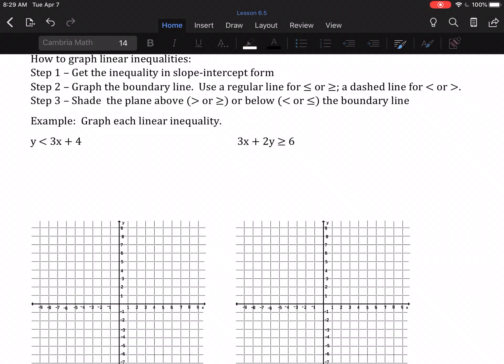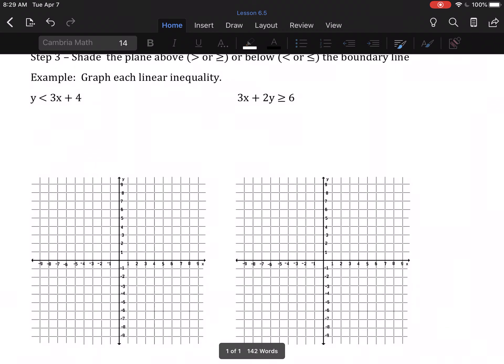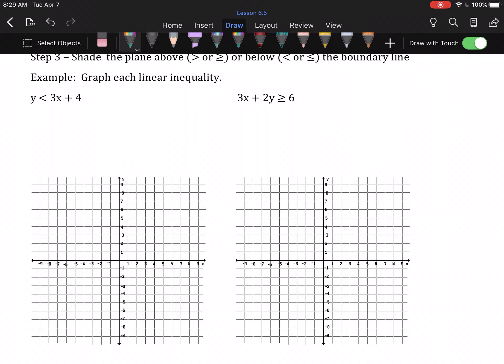When you're describing it, it's basically 4 steps: plot the y-intercept, count off the slope, tell me which kind of line we're using, tell me if we're shading above or below. So the first inequality here is in slope-intercept form. That is, y is less than mx plus b. So to graph it, I'm going to say out loud the 4 steps that you would write down while I physically do it.